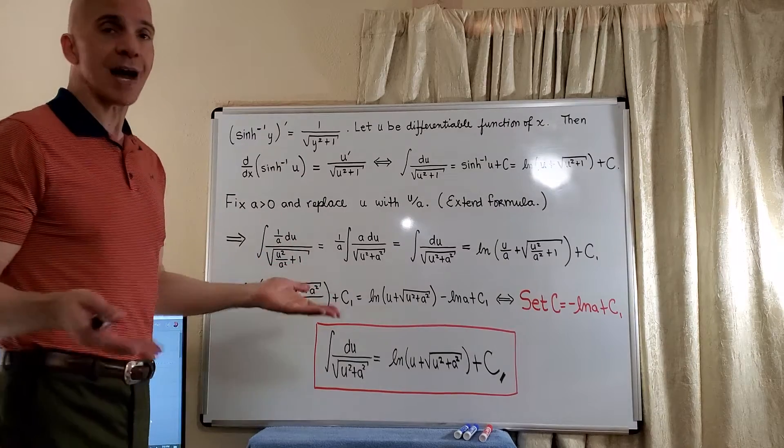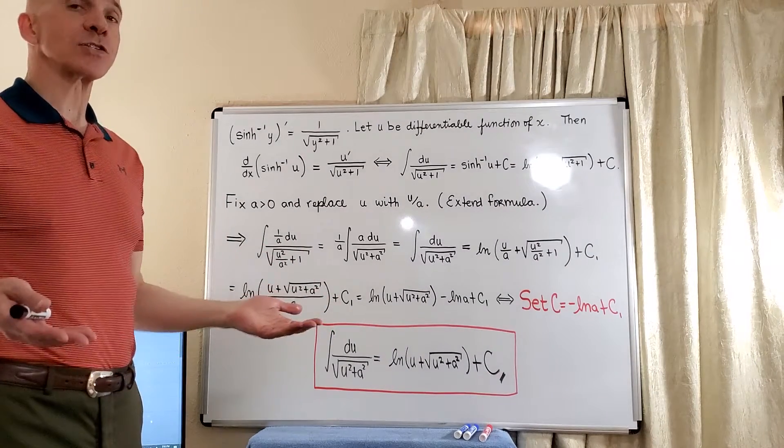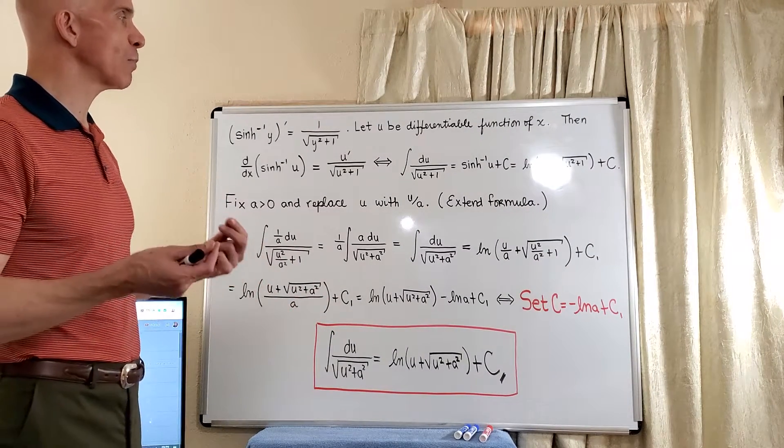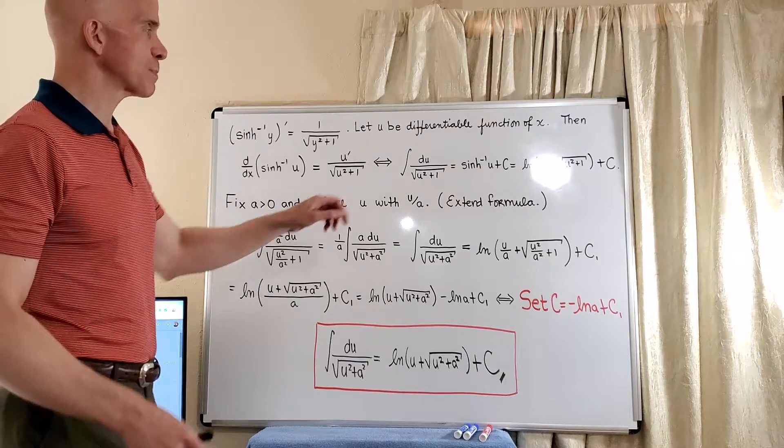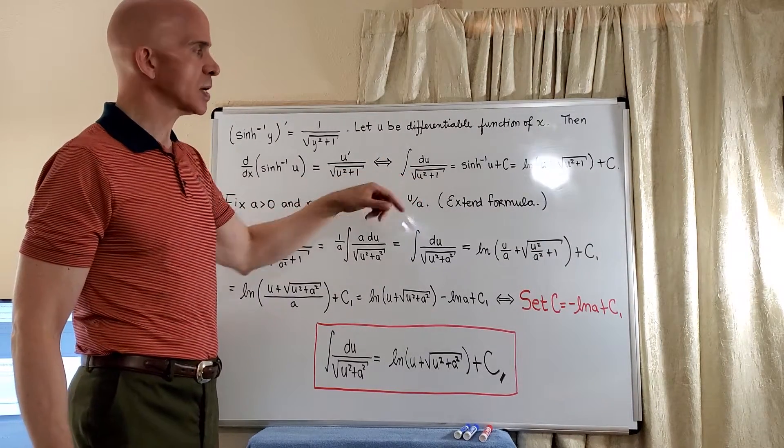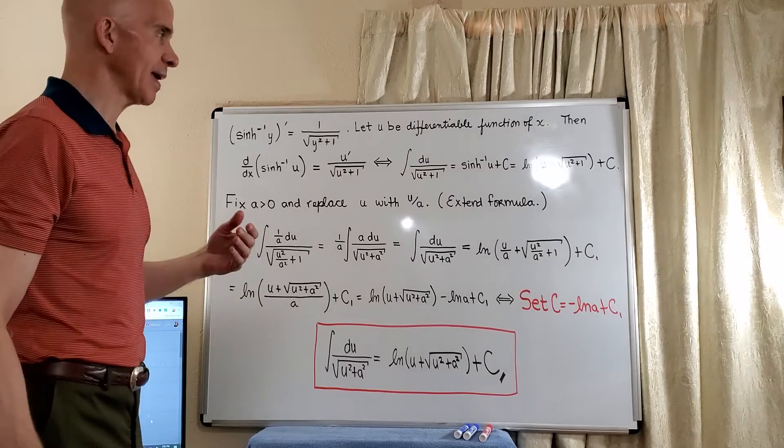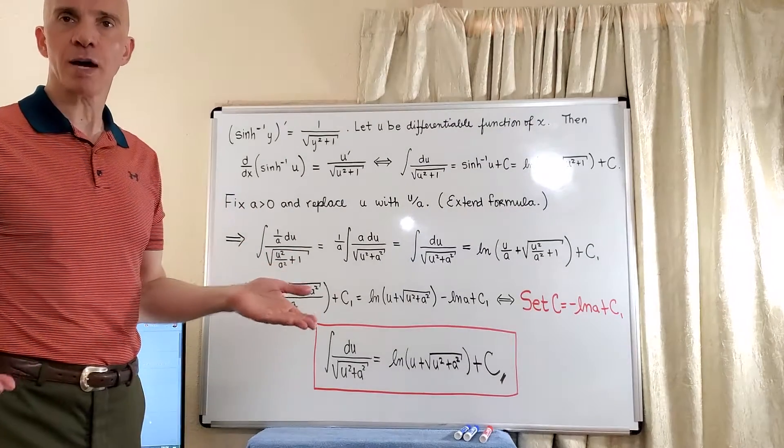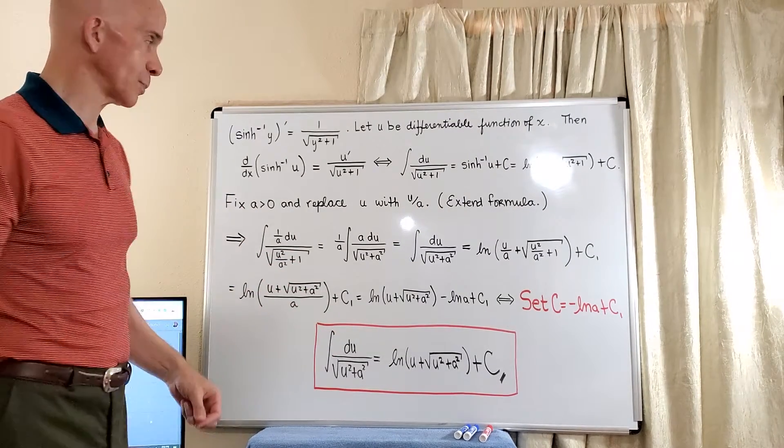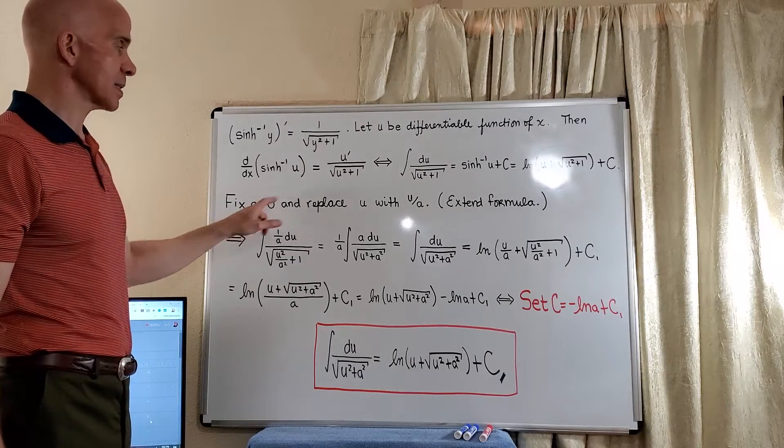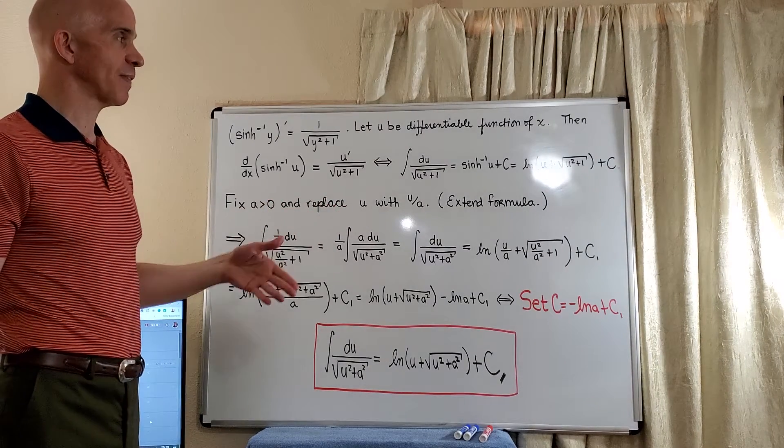So now that's a nice integral formula, but it's not as good as it can be. Anytime we have formulas with these Pythagorean square roots, we like to extend them. And you'll see these written up in integral tables. So let's fix an a positive and now replace u with u divided by a.